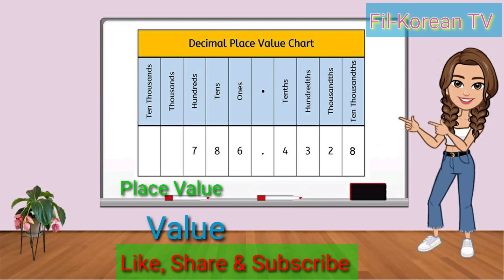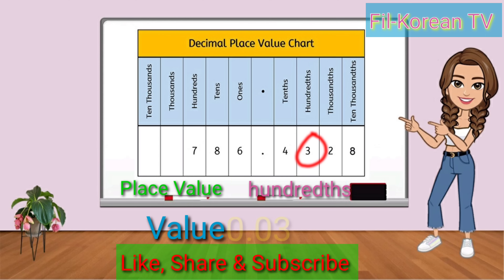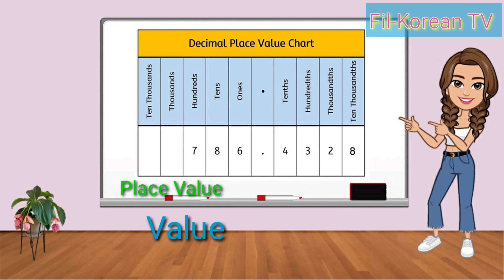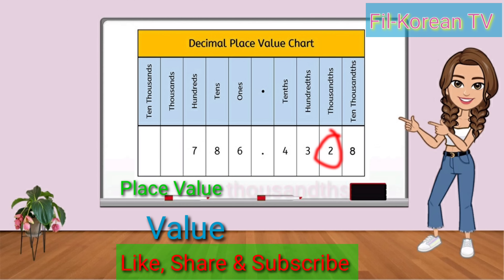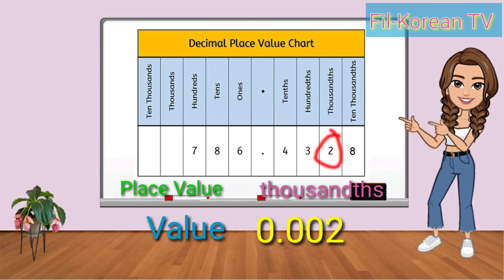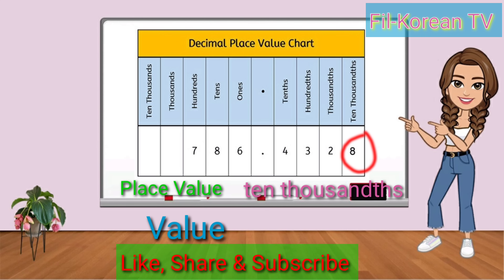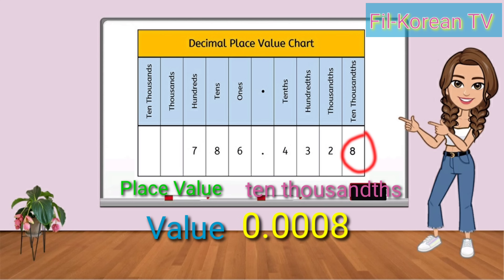The place value of the second digit to the right of the decimal point is hundredths, and the value is three-hundredths because the digit is three. The place value of the third digit to the right of the decimal point is thousandths, and the value is two-thousandths because the digit is two. Eight is the fourth digit to the right of the decimal point, and its place value is ten-thousandths, and the value is eight ten-thousandths.